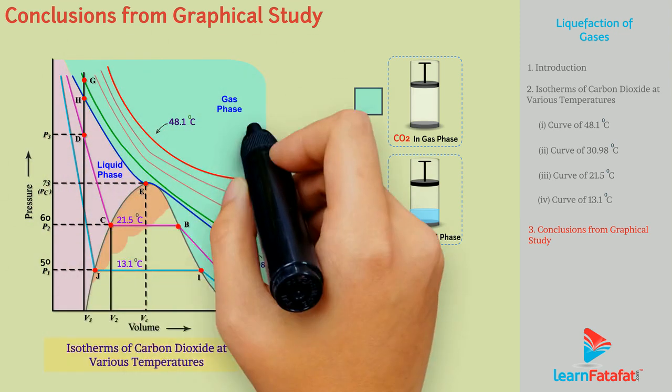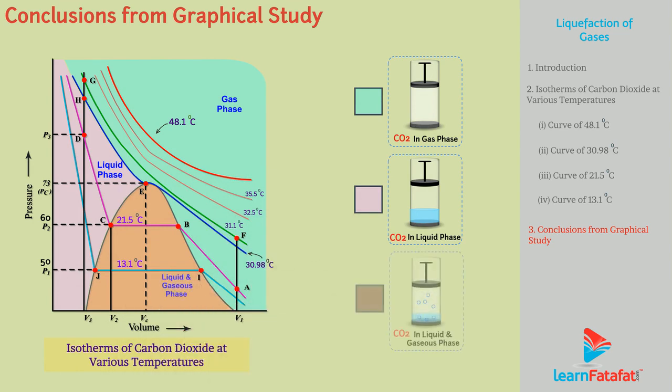In the region below dome-shaped curve, both liquid phase and gaseous phase occur simultaneously. And so, this is the two-phase region. Here there is equilibrium between the two phases.